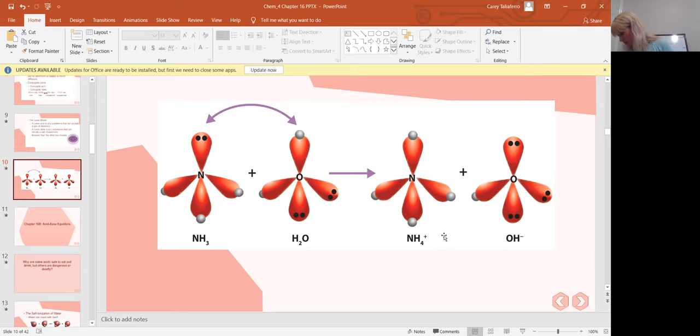This is also explained pretty well on page 412. You'll see that ammonia is acting as the Lewis base because it can donate a pair of electrons in the formation of a covalent bond. This is where you get that covalent bond.